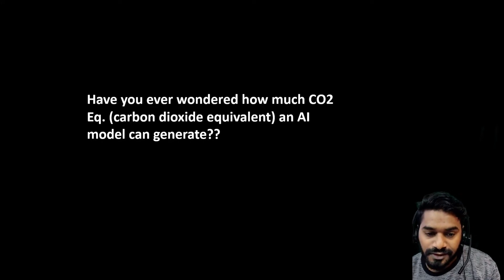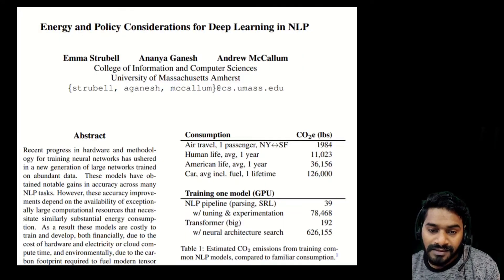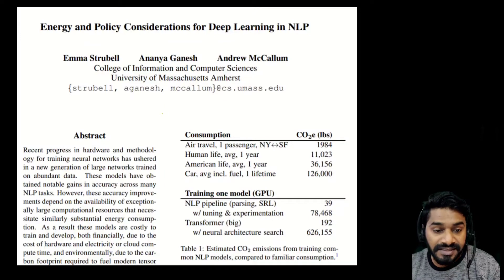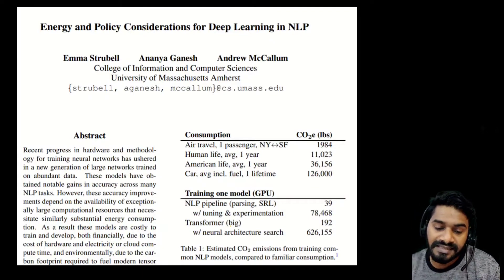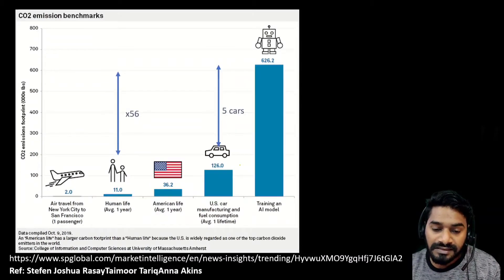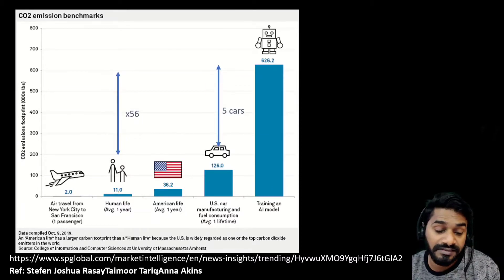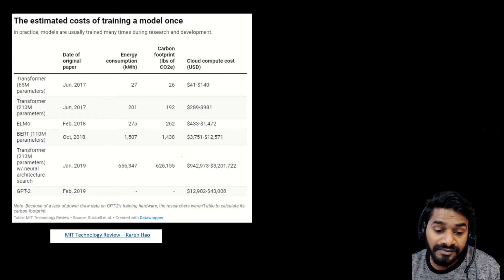Have you ever wondered how much CO2 equivalent an AI model can generate? A paper from MIT highlighted this very nicely — it shows the difference between carbon emitted when training big models like transformers compared to other daily activities. You'll be surprised to know that the CO2 emitted by training one AI model is 56 times the carbon produced by a human in one year, and it's equal to the lifetime emissions of five cars. That's quite huge.